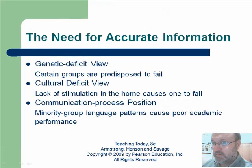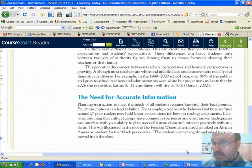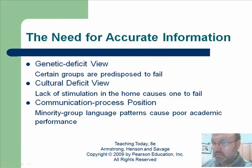There's a need for accurate information, and there are several views — please read page 112. A genetic deficit view is that you believe certain groups are predisposed to fail. A cultural deficit view is that lack of stimulation in homes causes failure — that's what we sometimes say about kids from poverty. A communication process position holds that minority group language patterns cause poor academic performance. Make sure you read this section.